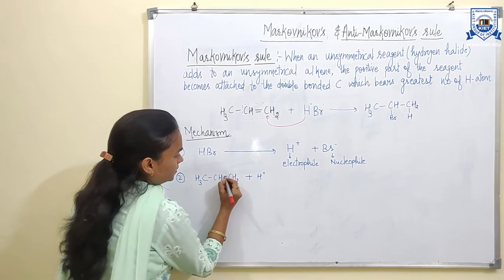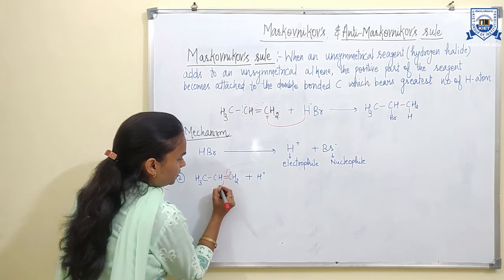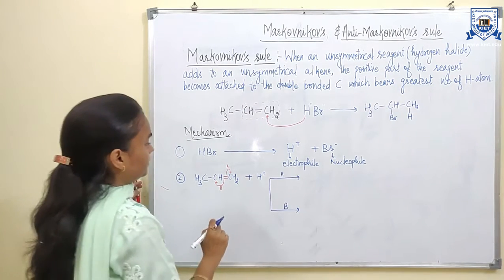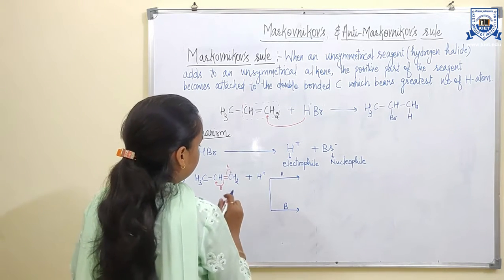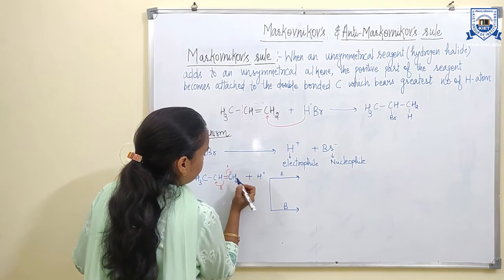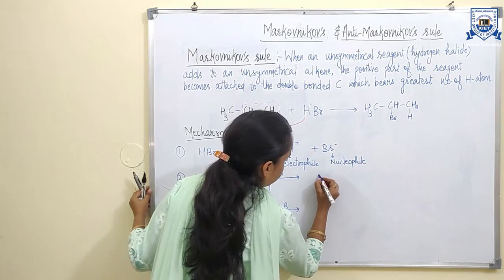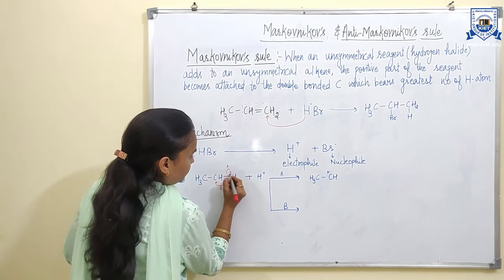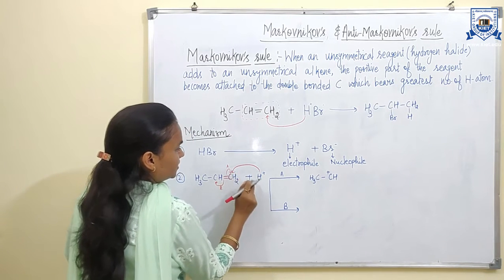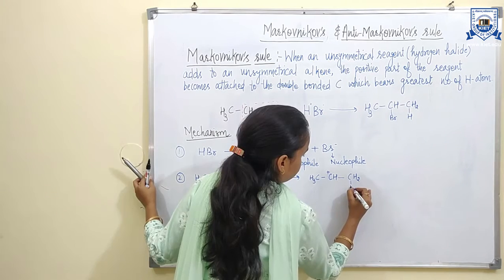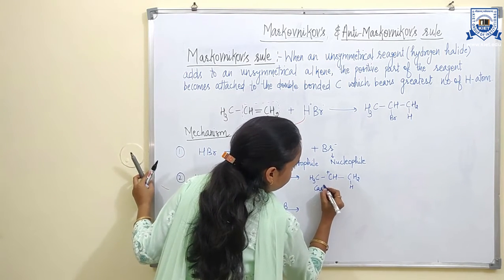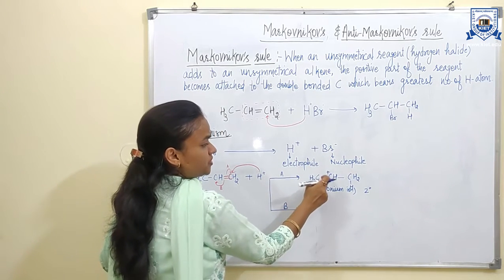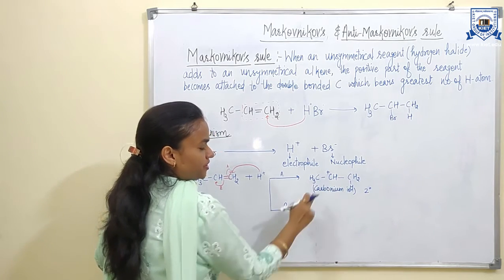Now here are two possibilities. The carbon-carbon double bond can break in direction A or direction B. If the bond breaks in direction A, the electron will shift towards that carbon, making the second carbon bear positive charge. The electrophile, proton H⁺, will attack on this carbon. A carbonium ion or carbocation forms, and its degree is secondary — a 2° carbocation — because the positive-charge-bearing carbon atom is further attached to two carbon atoms.